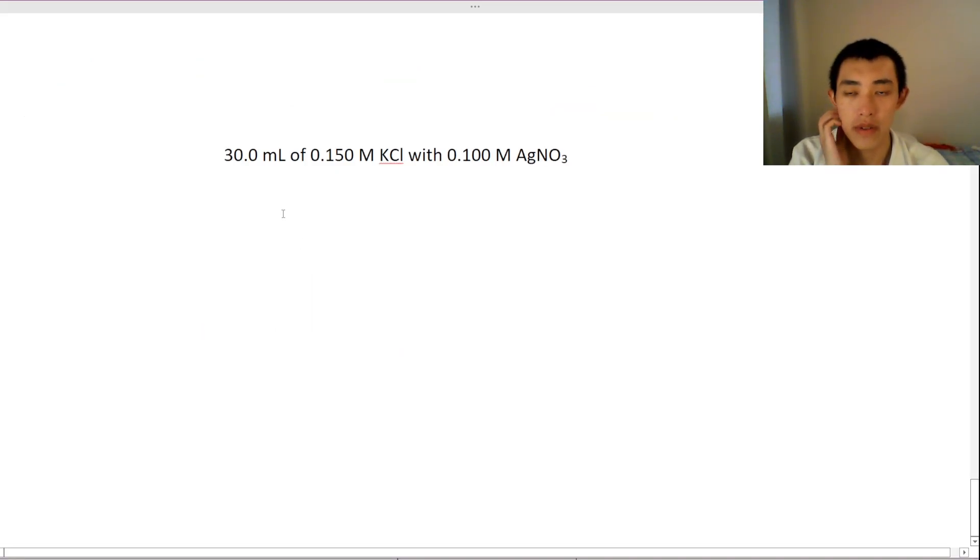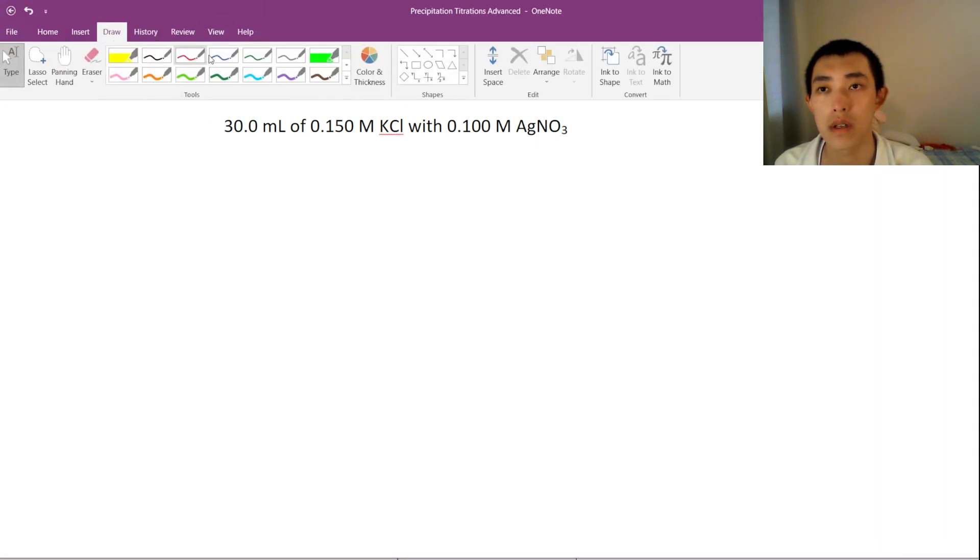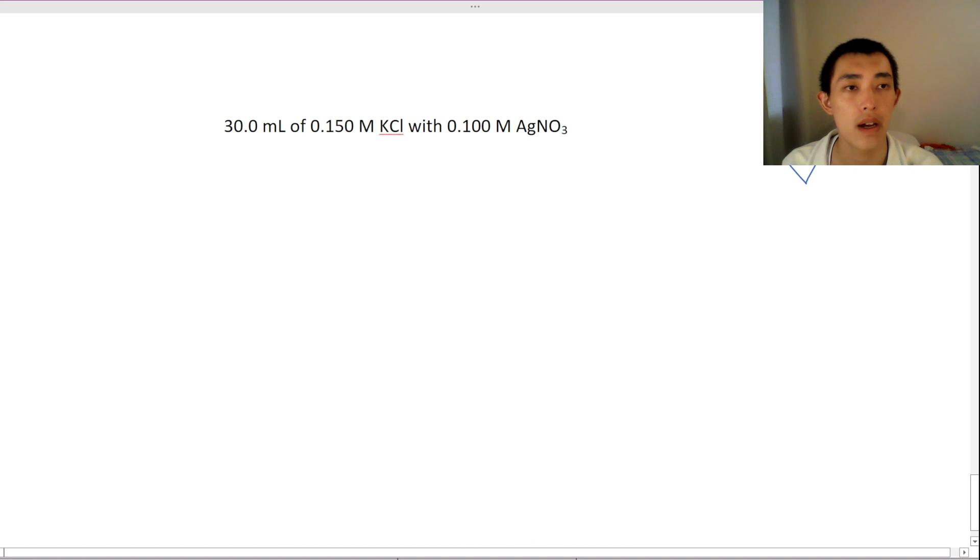So let's kind of draw the setup. So we have our AgNO3 up here, and we have our burette with our potassium. The potassium is a spectator ion. Only the chlorine is going to do anything. Potassium doesn't even matter. Let me just rub it out.